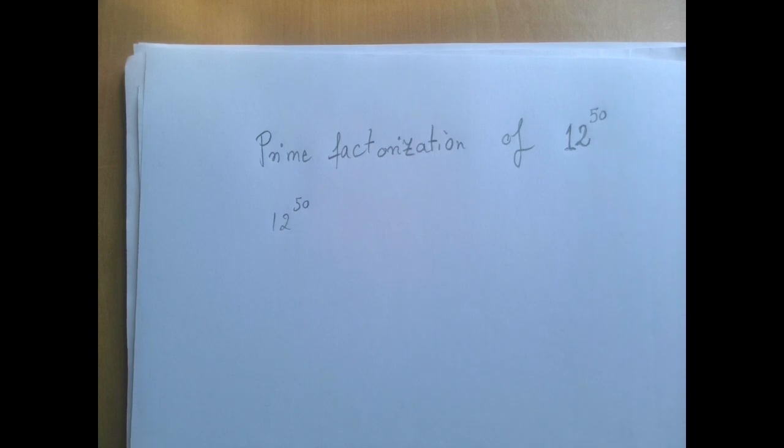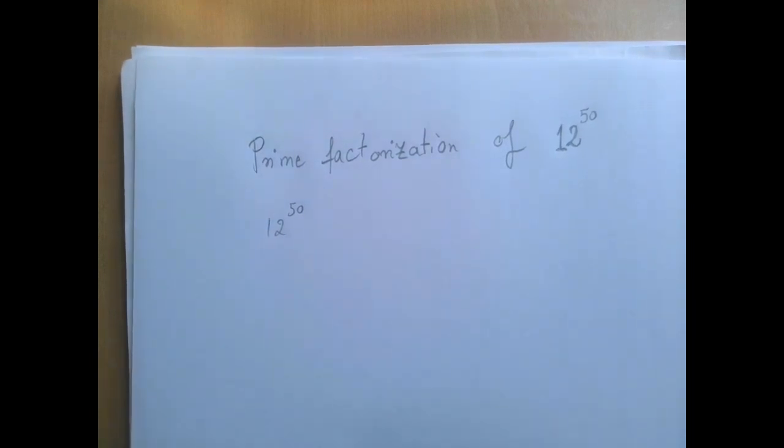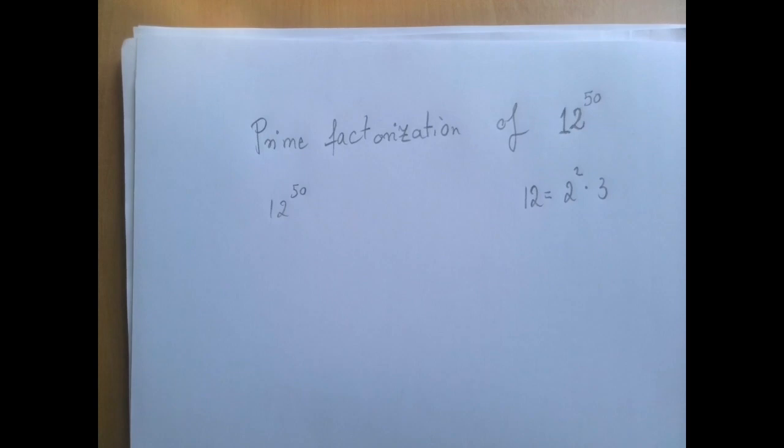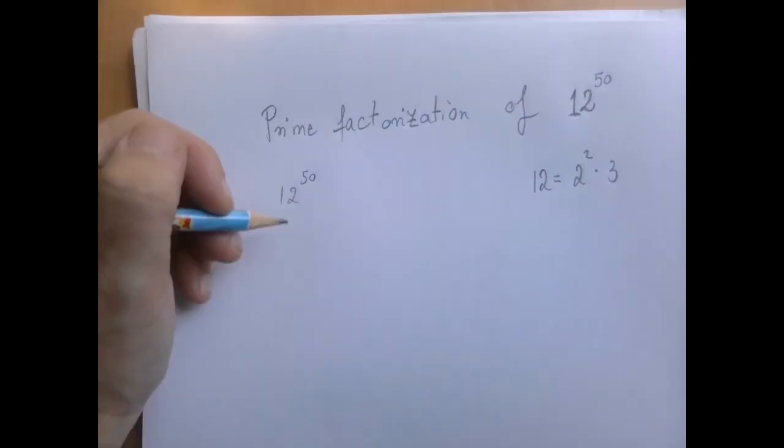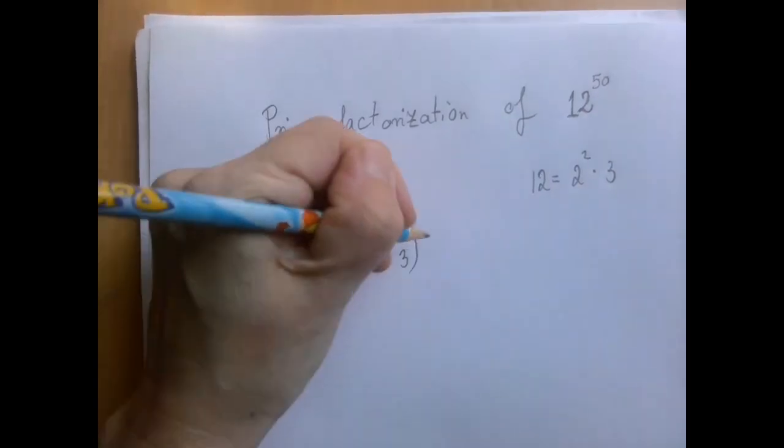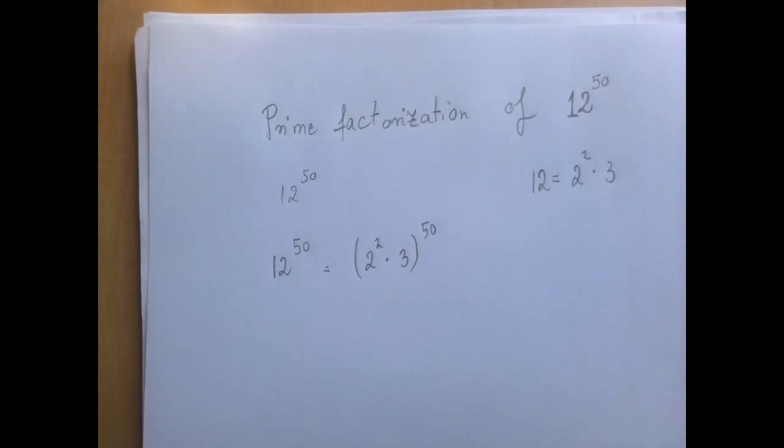Let's first figure out the prime factorization of 12. 12 is 3 times 4, which is 2 squared times 3. Therefore, 12 to the 50th is 2 squared times 3 to the 50th power.